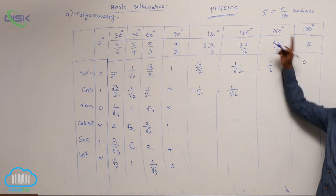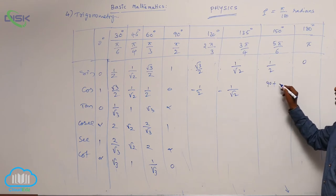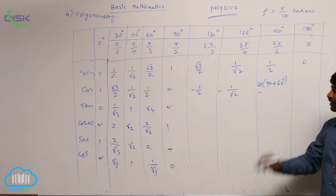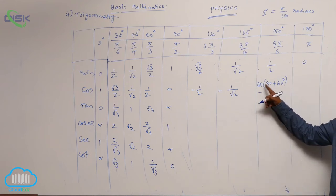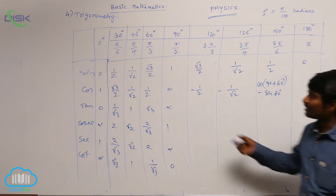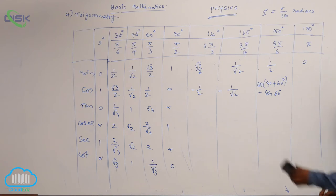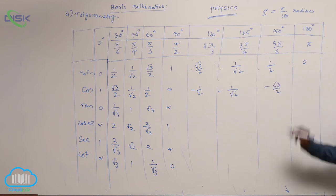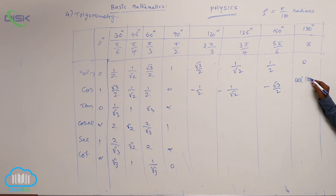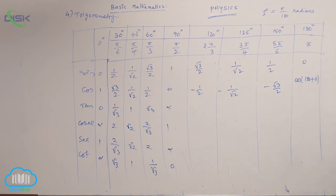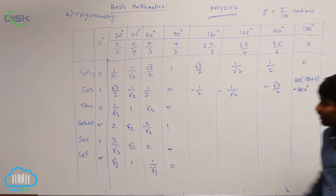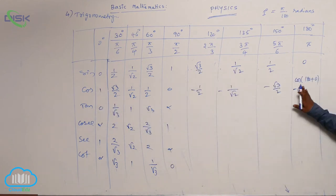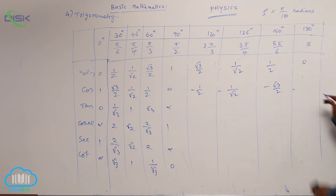For cos 150, taking cos(90 plus 60), in the second quadrant cos is negative, and for 90 you get sin, giving minus sin 60, which is minus root 3 by 2. For cos 180, using 180 plus 0, it is in the third quadrant where cos is also negative, giving minus cos 0, and since cos 0 is 1, the result is minus 1.